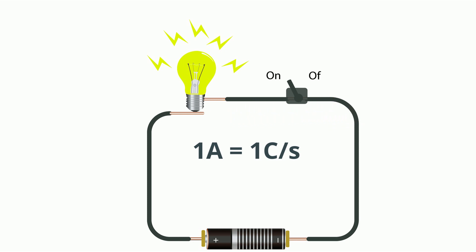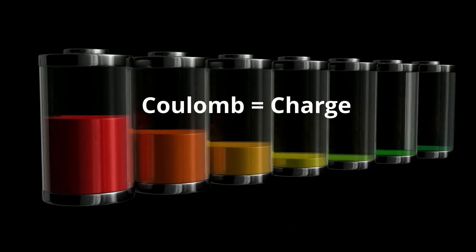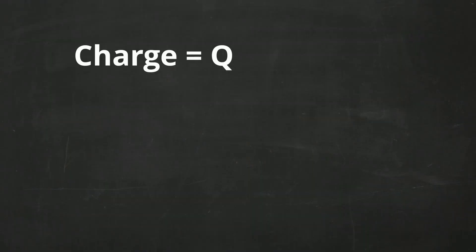Since a Coulomb is a measure of charge, let's talk about charge. Charge is written with the letter Q. Q equals N times e.